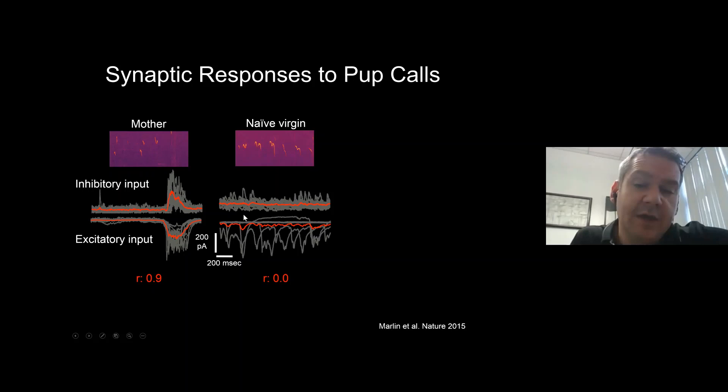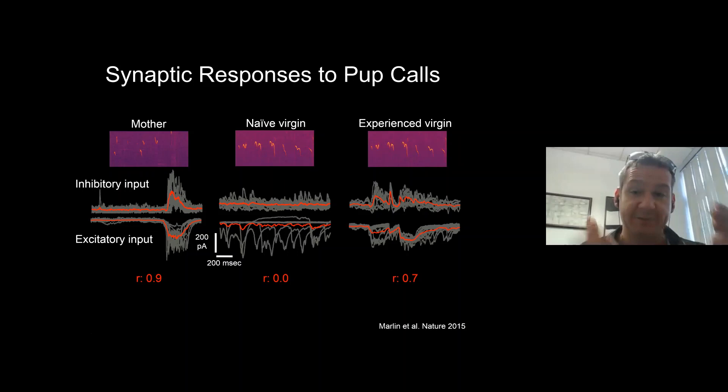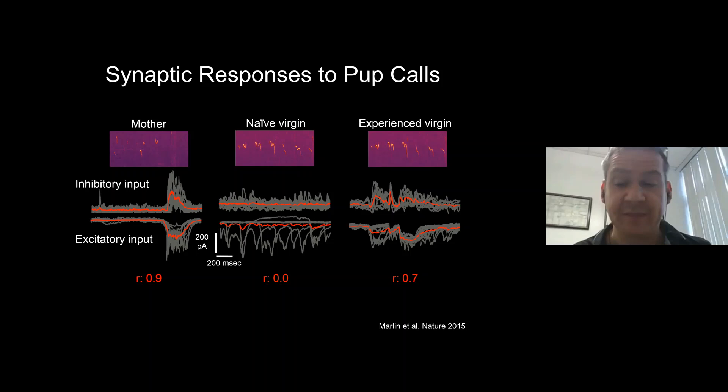Virgin animals don't have action potentials in response to pup call sounds not because they don't get input — they do get synaptic inputs — but those inputs are poorly timed and random from trial to trial, especially between excitation and inhibition. In many cells it looks like there's an ongoing amount of inhibition actively keeping cells from firing spikes. But in virgin animals who've been co-housed and verified as retrievers, patterns of excitation and inhibition are more matched — inhibition comes more into phase with excitation, enforcing reliable robust spiking on every trial.